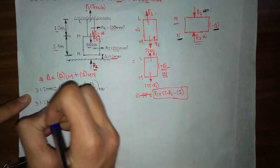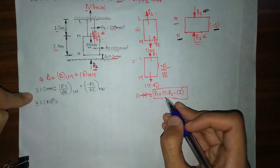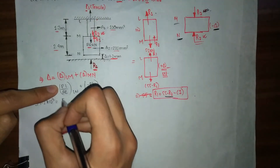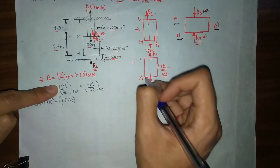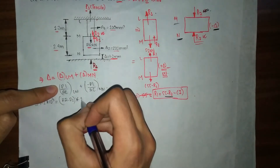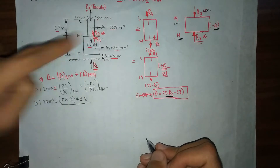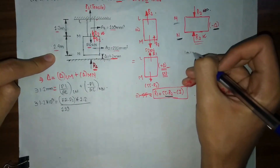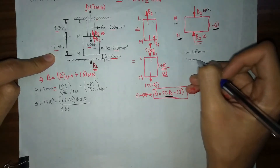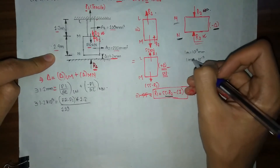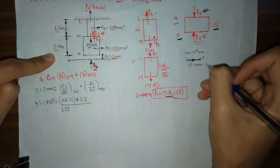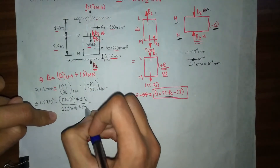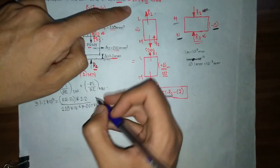Converting millimeters into meters (10 to the power of minus 3), we set up the equation. P1 equals 55 minus R2, so for the LM portion: (55 minus R2) × 1.2, divided by area 110 mm² converted to meter square (multiplying by 10 to the power minus 6), times E equals 200 × 10⁹.